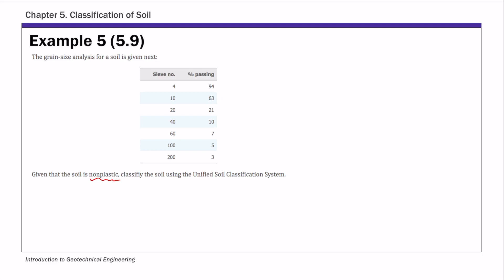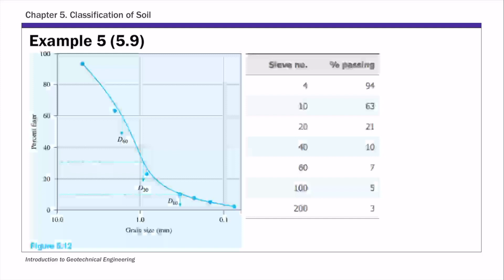For this example, first we're going to calculate the percent of fines, coarse, gravel, and sand. We're given this sieve analysis data, so we can actually plot the particle size distribution curve. The reason we need to do that is we need d10, d30, and d60 values to calculate the two coefficients for gradation.